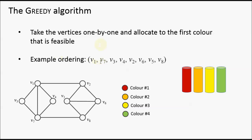Let's take an example ordering: vertex 1, followed by 7, then 3, 4, 2, 6, 5, 8. I'm going to allocate the lowest colour possible as I go through them one by one. On the right-hand side is another way of visualising this problem — taking the vertices one by one and dropping them into a coloured bucket: a red bucket, an orange bucket, and so on.